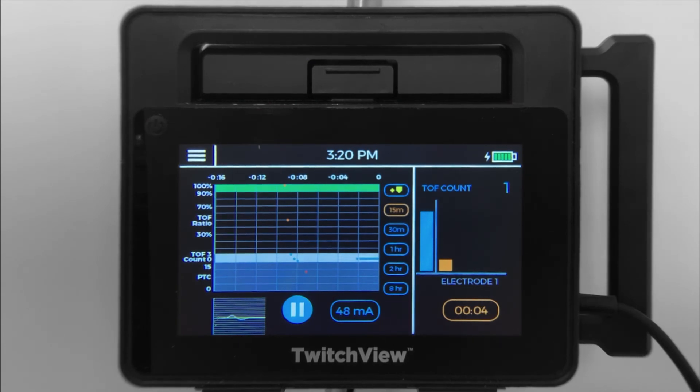Once reversal is administered, you can see patient recovery in real time. You can confirm a TRAIN-4 ratio of greater than 90% is achieved prior to extubation. A TRAIN-4 ratio of greater than 90% is indicated by the green highlight.